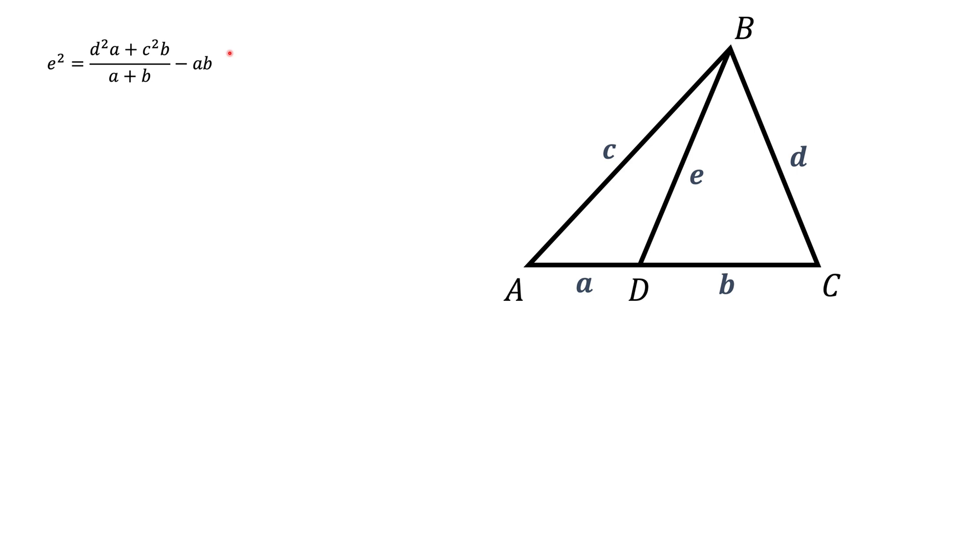When you look at this triangle ABC, you see that there are two triangles inside. There's a left blue triangle ABD, and we have the right triangle CBD. Now if you look at the angle D in the blue triangle, let's call this angle theta. In this case, the angle D in the red triangle will be 180 minus theta.